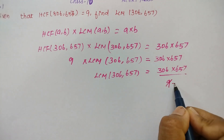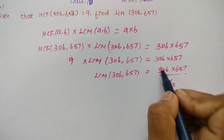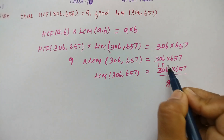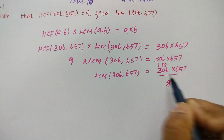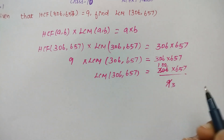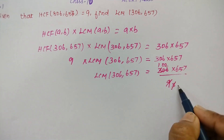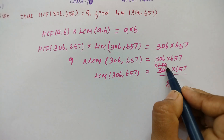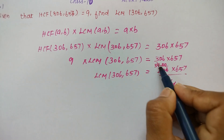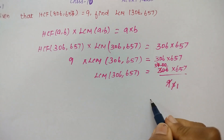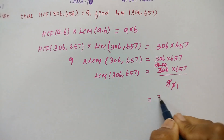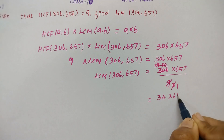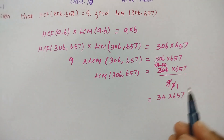We divide using the number 3. 3 threes are 9, 1 three is 3, 0, 2 threes are 6. Again, 1 three is 3, 3 threes are 9, remaining: 4 threes are 12. So, 306 divided by 9 gives 34, and we now have 34 into 657.